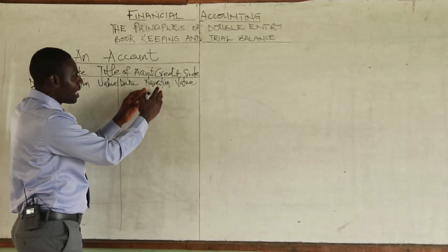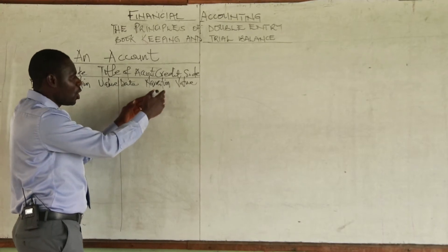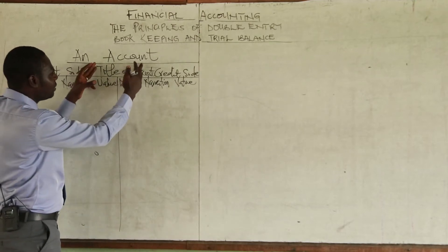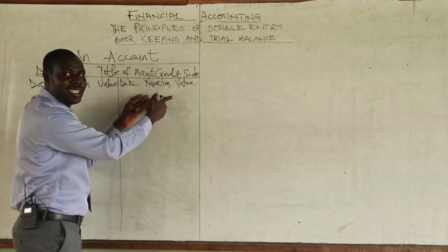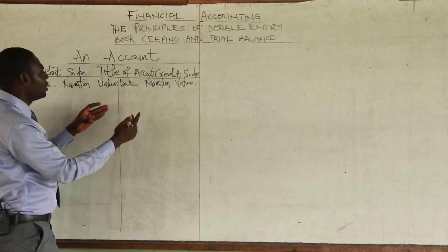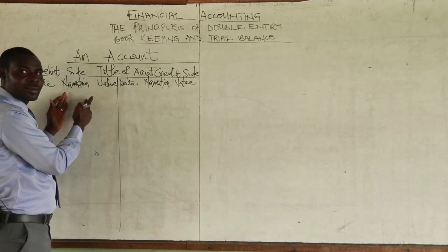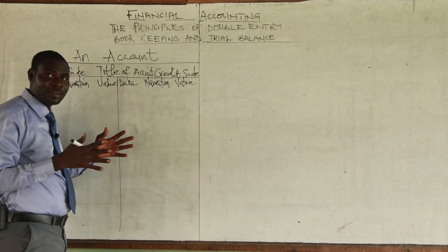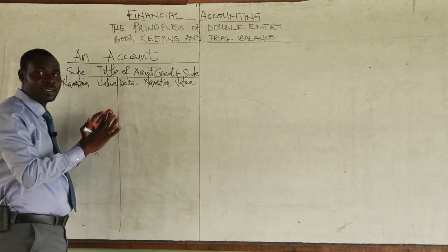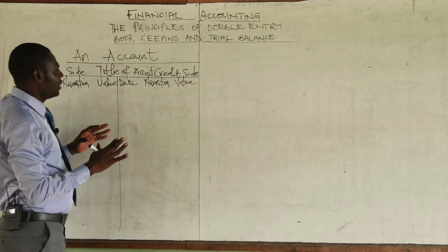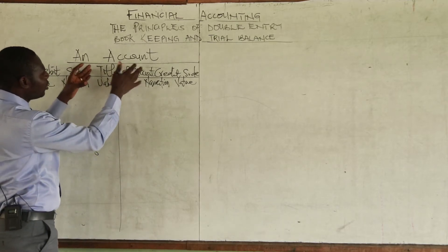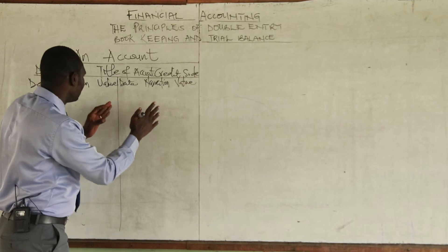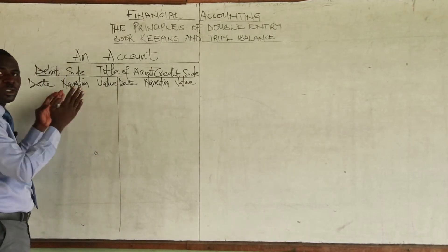On the credit side, where the account is credited, you write the name of the corresponding account which will be debited. For example, if you have a cash account here, you are not expected to write 'cash' in the narration of the same account. There are exceptions, especially with the cash book, but primarily that rule holds.